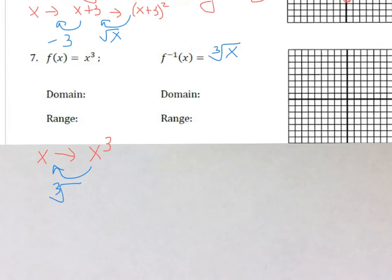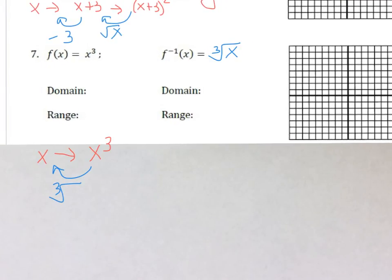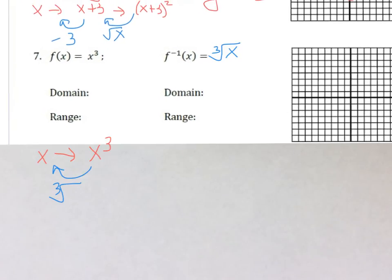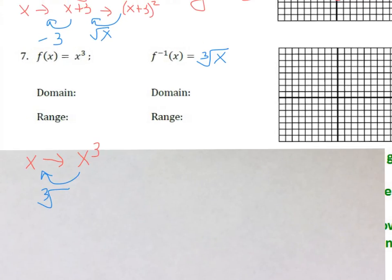So we graphed these earlier in the week. So the general shape is that s shape. If you plug in 0 to x to the third, you get 0. You plug in, let's plug in 2, we get 8. If I plug in negative 2, I get negative 8. So I get this really long s shape.